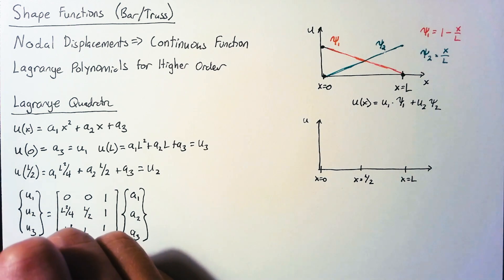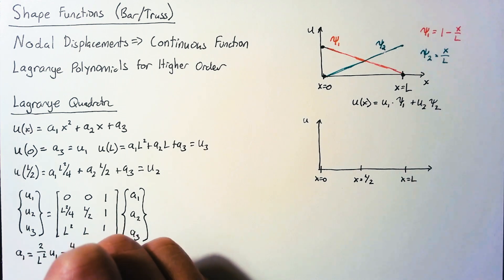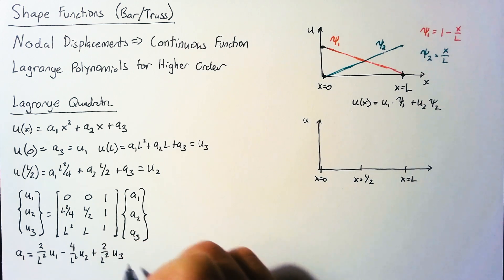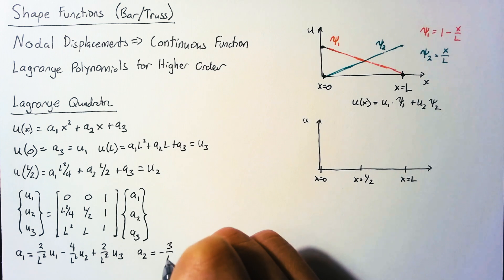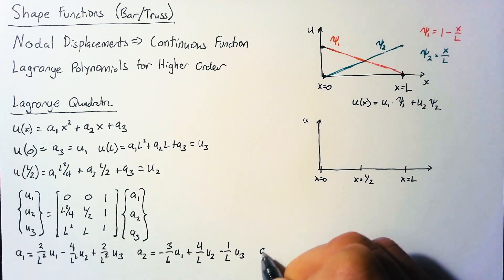So a1 is equal to 2 over l squared multiplied by u1 minus 4 over l squared multiplied by u2 plus 2 over l squared multiplied by u3. a2 looks a little different. And then finally, a3 is simply u1.